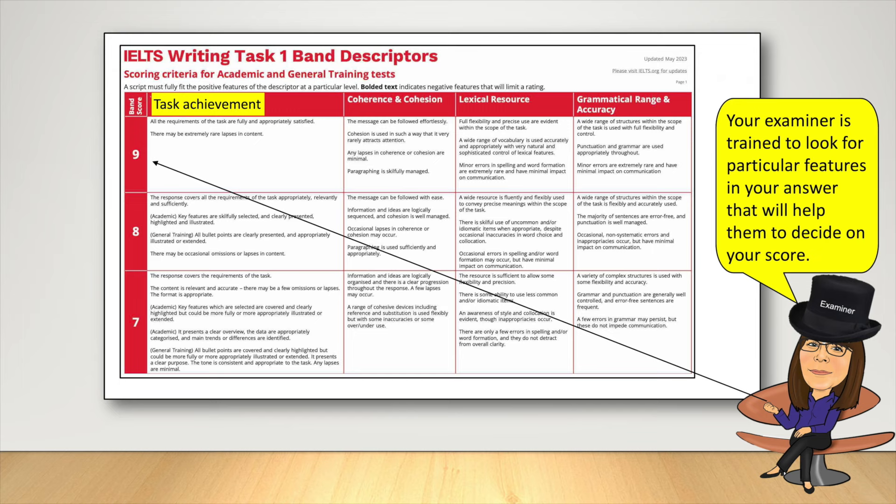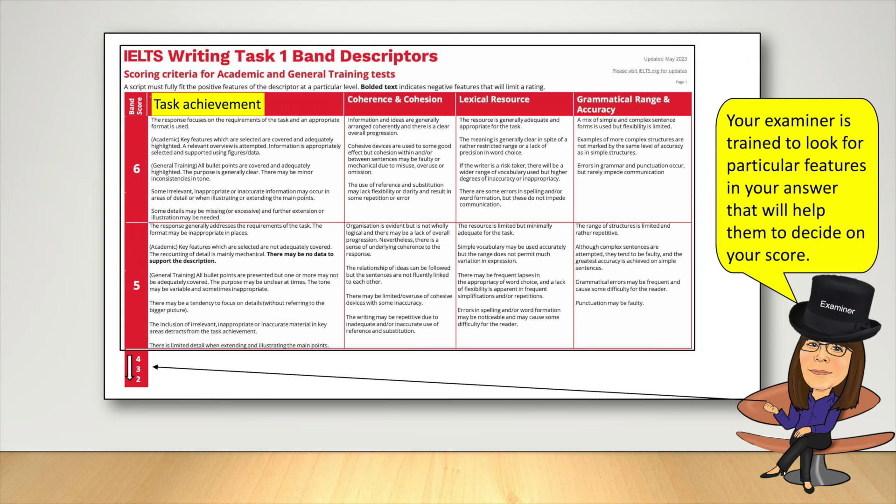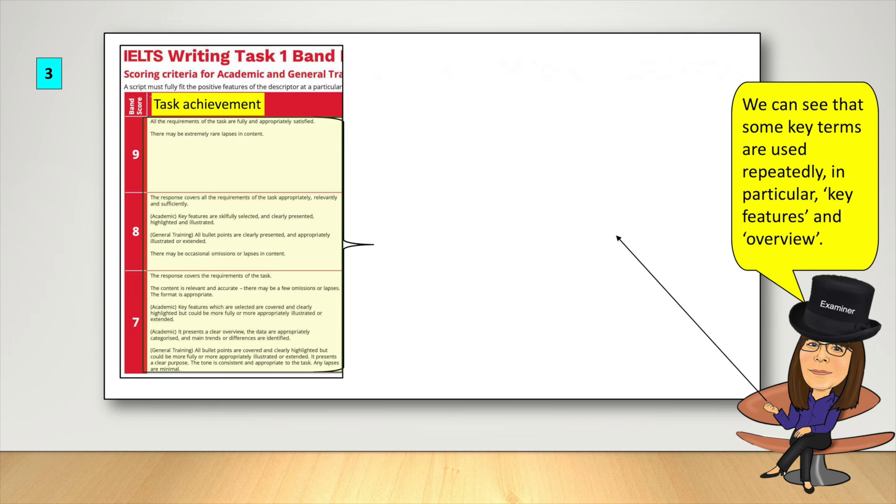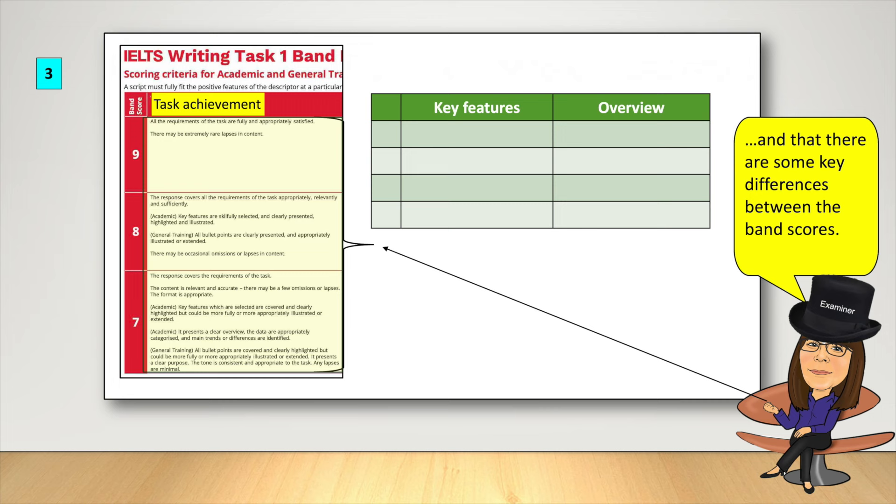Your examiner is trained to look for particular features in your answer that will help them to decide on your score. We can see that some key terms are used repeatedly, in particular key features and overview. And there are some key differences between the band scores.